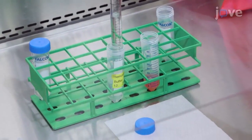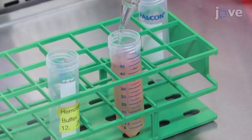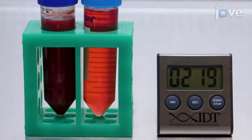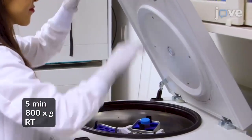Add fresh hemolytic buffer to bring the volume up to 50 milliliters and incubate the cells for another 5 minutes at room temperature before their collection by centrifugation.